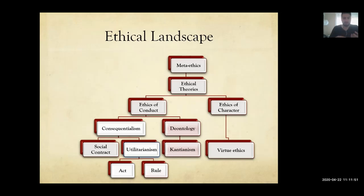We talked about consequentialism. On the map, social contract theory was covered with Hobbes, utilitarianism was covered last week, and this week we're going to cover deontology. Deontology is completely separated from consequentialism, which should tell you that deontology is not about the consequences of your actions.